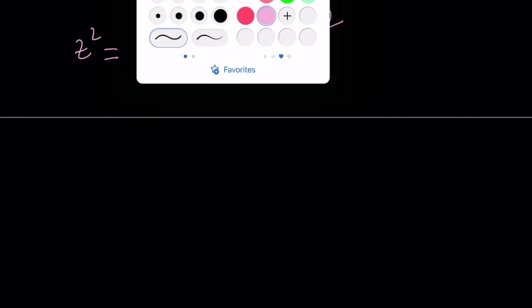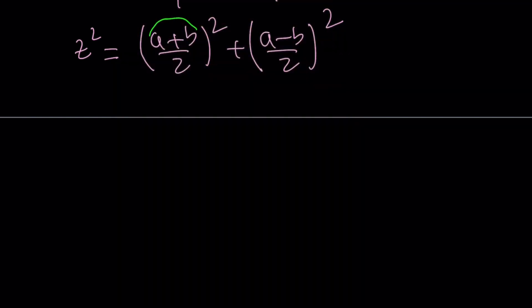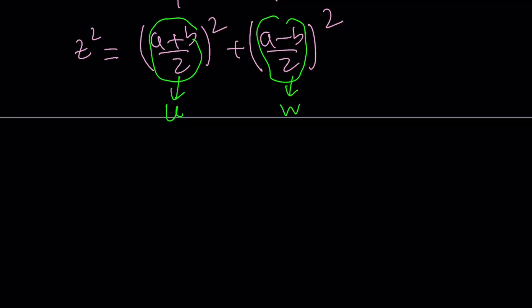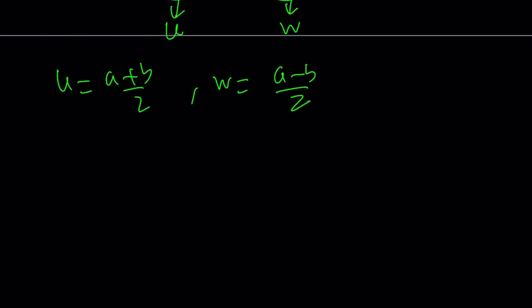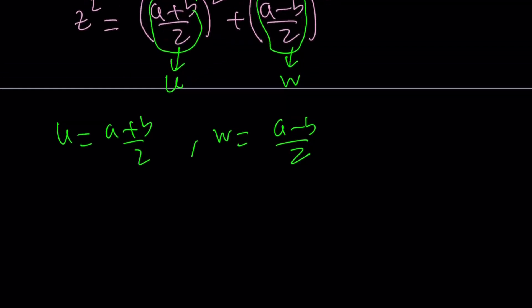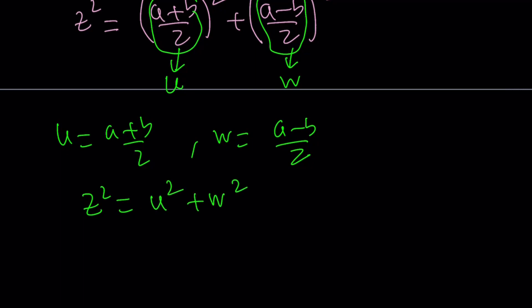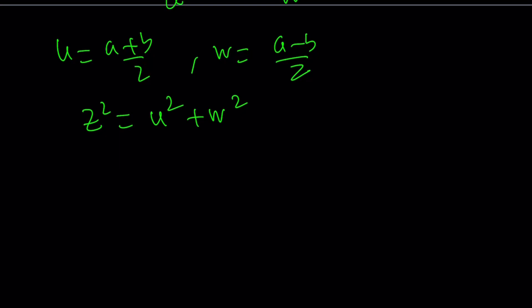Let's do a little more substitution. Call u equal to (a+b)/2 and w equal to (a−b)/2. So we have z squared equals u squared plus w squared. And guess what? This is the good old Pythagorean theorem. We know there are infinitely many solutions to this, but let's express them using parameters.